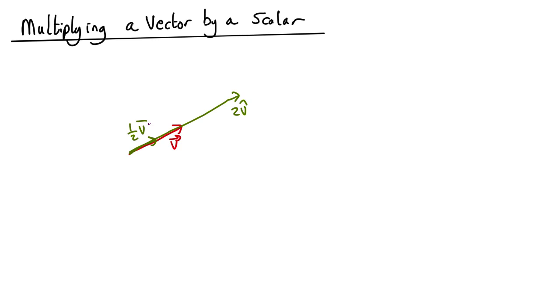If you multiply by a negative number, you reverse the direction. So minus v looks like this. Minus 2v will look like this.